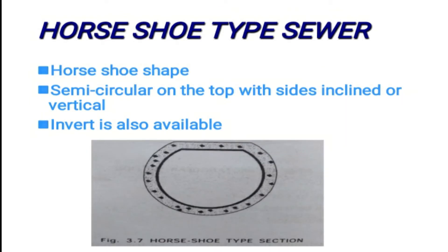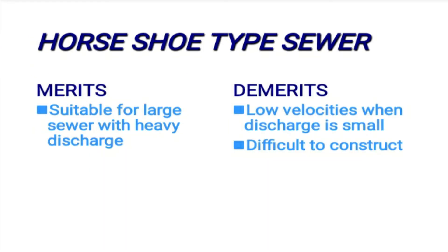The horseshoe type sewer has a horseshoe shape. The top is circular and the sides extend vertically before inclining outward. It is suitable for large sewers with heavy discharge. However, a demerit is that velocities are low when discharge is small, since this sewer is designed for large flows.